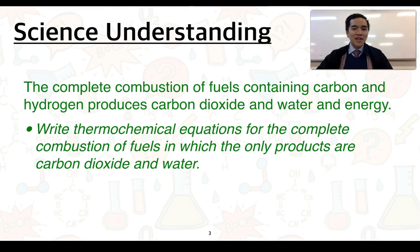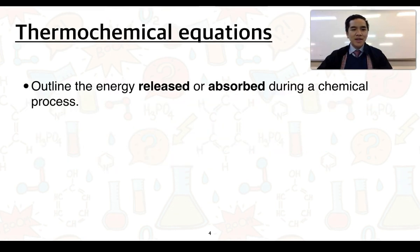The complete combustion of fuels containing carbon and hydrogen produces carbon dioxide, water, and energy. You'll need to know how to write thermochemical equations for the complete combustion of fuels in which the only products are carbon dioxide and water. Thermochemical equations, something we covered in stage 1 chemistry, essentially outline the energy that is released or absorbed during a chemical process.